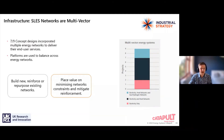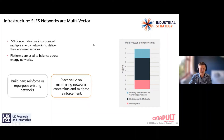Placing value on minimizing network constraints was another way that projects recognized the value of infrastructure in the area — in particular, mitigation of reinforcement. Generally, electricity networks, since they're the most expensive to reinforce, are the ones that were really focused on.